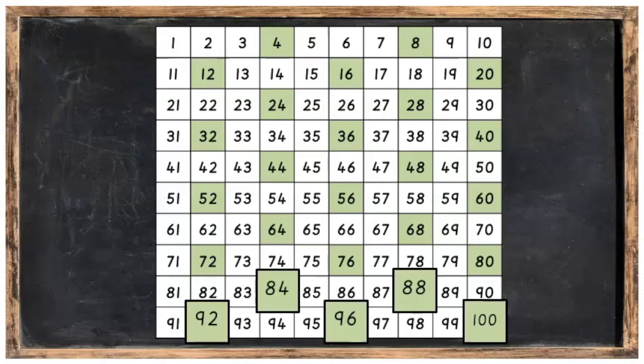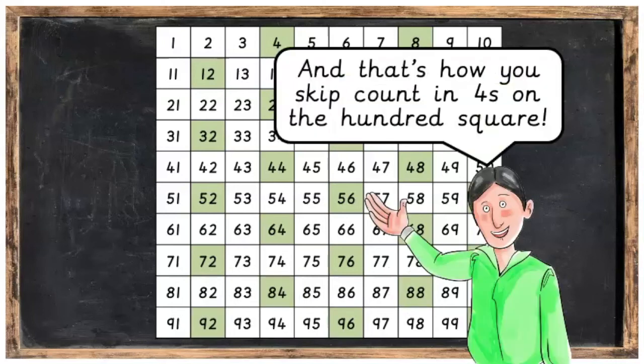Because they all have a four, eight, two, six and zero in them. And, that's how you skip count in fours on the hundred square.